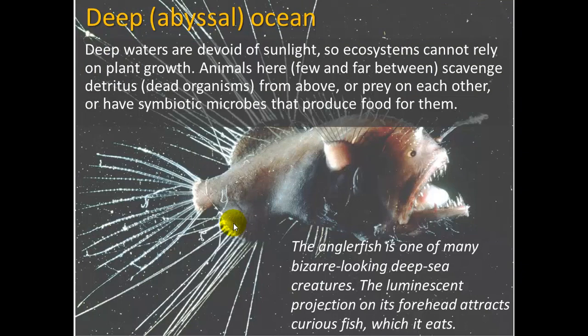The deep abyssal ocean is devoid of sunlight, so ecosystems cannot rely on plant growth. Animals here are few and far between — they scavenge detritus and dead organisms from above, prey on each other, or have symbiotic microbes that produce food for them. The anglerfish is one of many bizarre deep-sea creatures; its luminescent projection attracts curious fish, which it then eats.